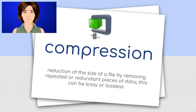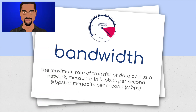Compression: reduction of the size of a file by removing repeated or redundant pieces of data. This can be lossy or lossless. Bandwidth: the maximum rate of transfer of data across a network, measured in kilobits per second, kbps, or megabits per second, mbps.